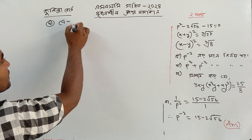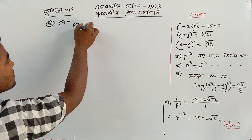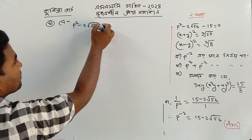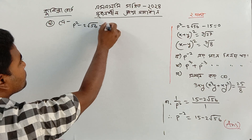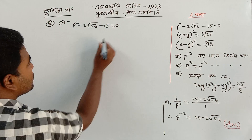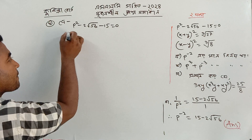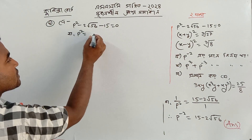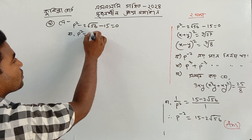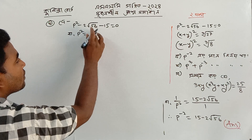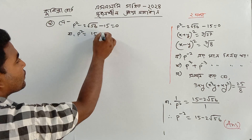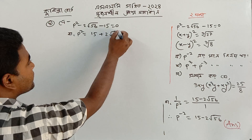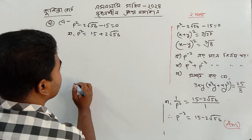2 p squared minus 2 root over 17 minus 15 equal to 0. 2 p squared equal to 15 plus 256.